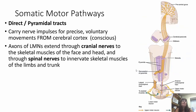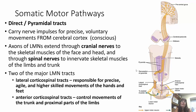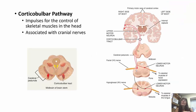We have direct and indirect motor tracts. The direct tracts are pyramidal tracts, carrying nerve impulses for voluntary, precise, conscious movements from the cerebral cortex. The axons of lower motor neurons extend through cranial nerves to skeletal muscles of the face and head, and through spinal nerves to innervate skeletal muscles of the limbs and trunk. Two major ones are the lateral corticospinal tract — responsible for precise, skilled movements of the hands and feet — and the anterior corticospinal tract, which controls movements of the trunk and proximal parts of the limbs. The corticobulbar pathway controls skeletal muscles in the head via cranial nerves.